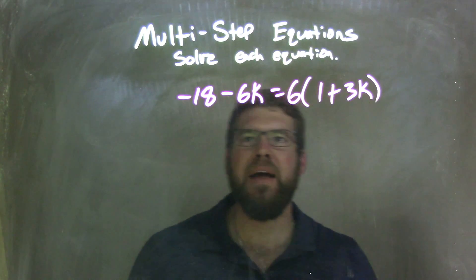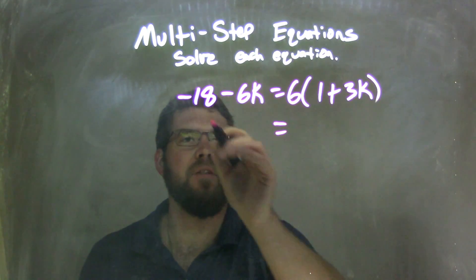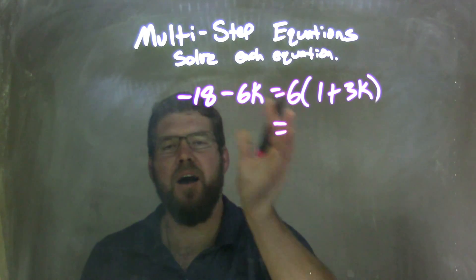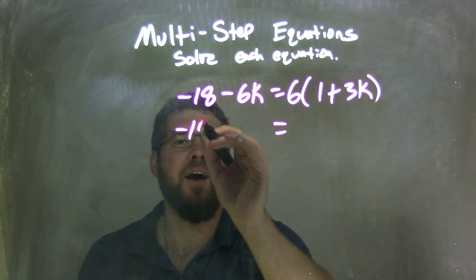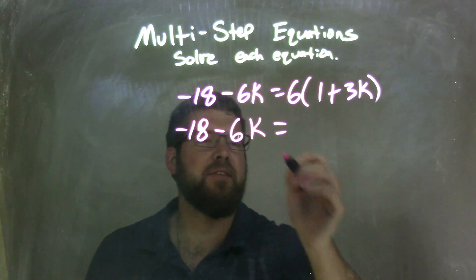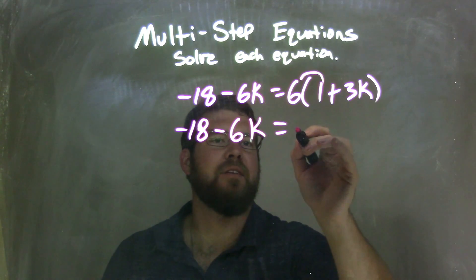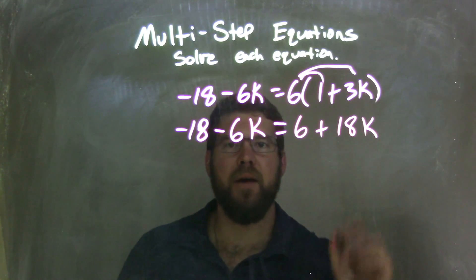My first step here, I'm going to distribute that 6 to both parts in the parentheses. The left side can't be simplified, so I'll leave negative 18 minus 6k. Distributing the 6 inside: 6 times 1 is 6, plus 6 times 3k is 18k.